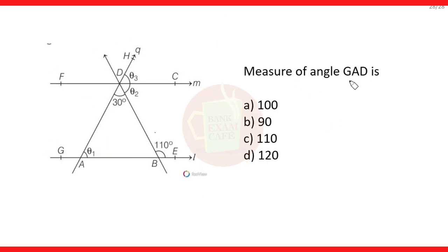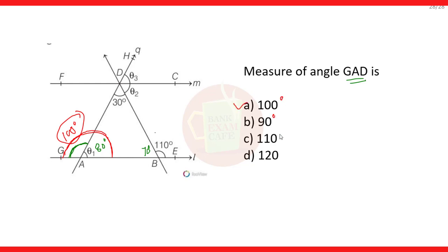The next question is: Find the measure of angle GAD. We have this angle as 70 degrees, 30 degrees, and theta 1 as 80 degrees. Since theta 1 is 80 degrees, and this is a linear pair, the sum of these two angles should be 180 degrees. One angle is 80 degrees, so the other angle will be 100 degrees. Therefore, angle GAD equals 100 degrees. Option A, 100 degrees, is the correct option.